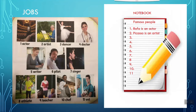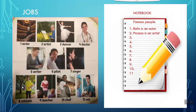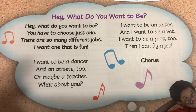Excellent! As you can see, we have different jobs and occupations. For example, in my case I am number nine — teacher, your teacher. Now on your notebook, you have to list famous people with those jobs. We have two examples: example number one — Rafa is an actor; example number two — Picasso is an artist. You have to continue with numbers 3 through 11 on your notebook.